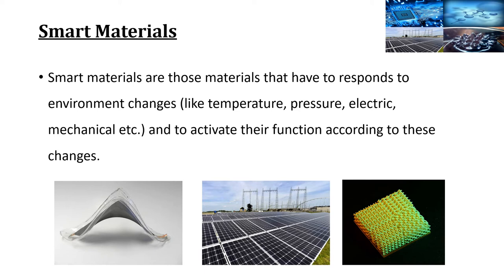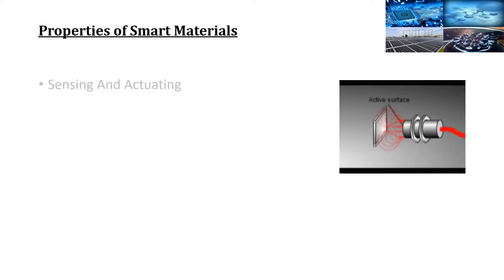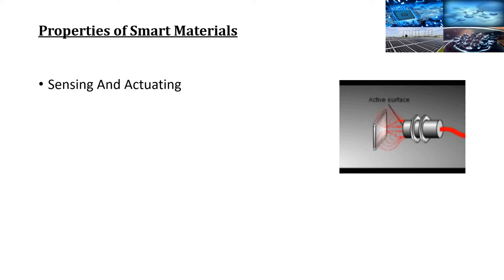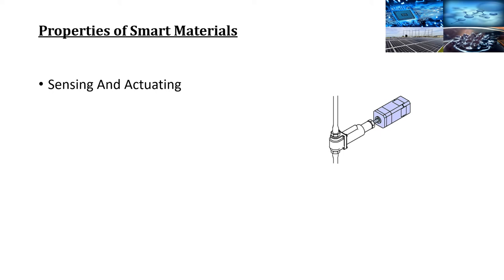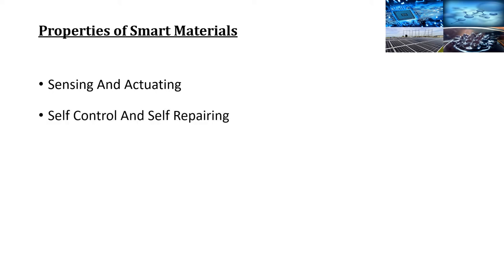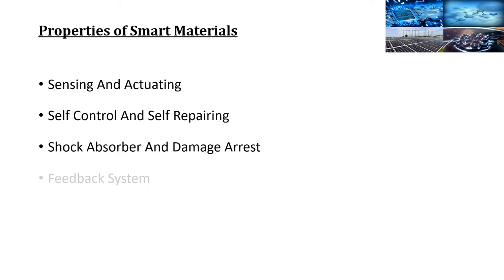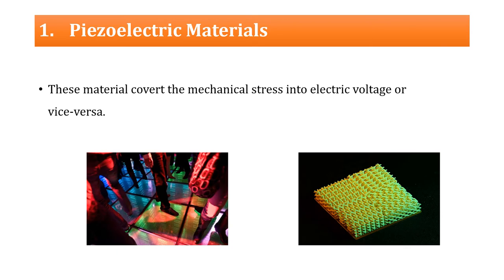Smart materials have sensing and actuation capabilities — they sense movement and rotation and activate themselves accordingly. They should have self-control and self-repairing properties, shock absorber and damage arrest properties, and a proper feedback system so they can improve their function when environmental changes occur. There are many types of smart materials, but we are studying only the common smart materials used in industries and practical applications.